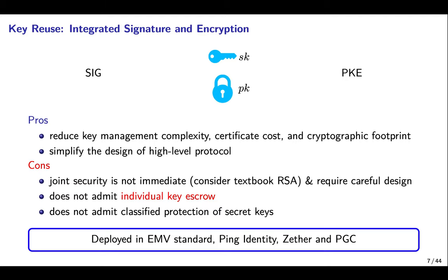The key reuse principle stipulates that Signature and Public Encryption components use the same key pair. We refer to such a scheme as Integrated Signature and Encryption, abbreviated as ISE. The advantage of key reuse is that it reduces key management complexity, certificate costs, and cryptographic footprint, and simplifies the design of high-level protocols. The disadvantage is that joint security is not immediate and thus requires careful design, and it does not admit individual key escrow and classified protection of secret keys. In the real world, ISE has been deployed in the EMV standard, PIN identity, and cryptocurrencies such as ZISA and PGC.